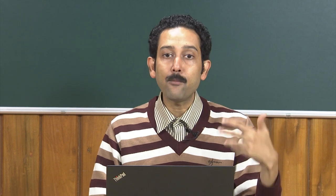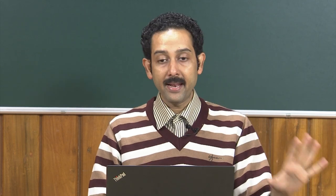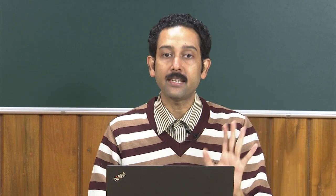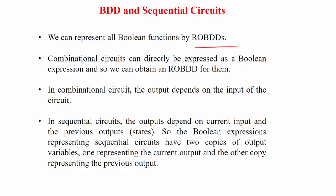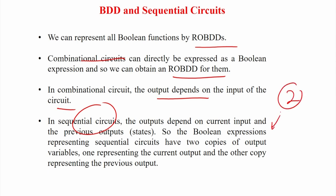Next we are going to see how the labeling and model checking algorithms can be applied to those BDDs, so that you can do model checking in the BDD representation rather than the explicit Büchi automata model. We know that Boolean functions can be represented by reduced ordered BDDs for combinational circuits. But this does not directly apply to sequential circuits, because in a combinational circuit the output depends only on the input—you can directly make BDDs. In sequential circuits, the output depends on both the input and the present state, and there are two types of outputs: the next state and the primary outputs.